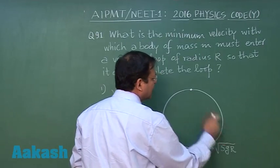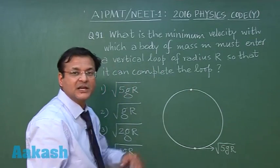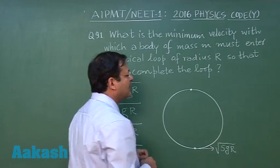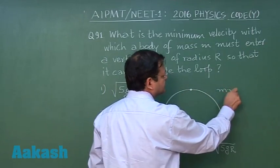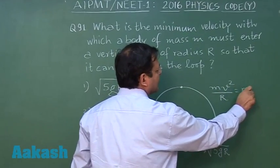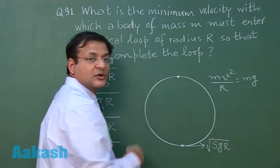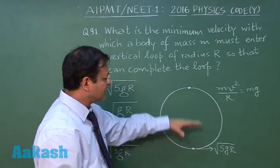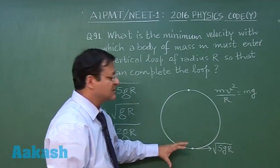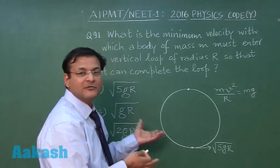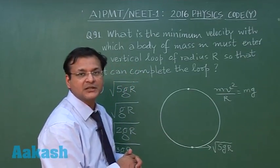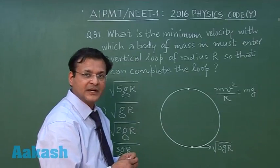If you want to do the calculation, this velocity √gR can be obtained by balancing the force like mv²/R = mg. That will give you the expression of velocity here, and between this point and this point you can do the energy balance to obtain this particular result. I will always suggest that this is the kind of expression you should remember as a direct result.